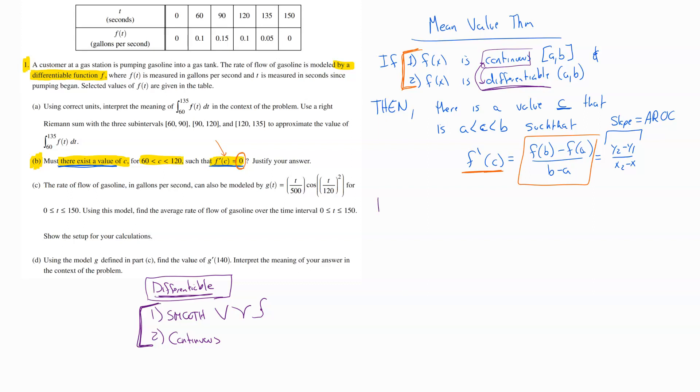And so because it is differentiable, we know for sure these two things are true. And so you would say, because f of x, or I guess in this situation it would be f of t, be careful. So f of t is differentiable. And then we'd want to tell them on the specific interval that they care about. It's differentiable all over the place, but specifically we would care about 60 to 120.